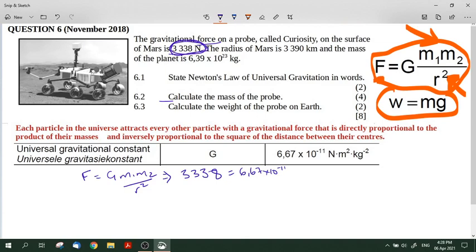So it's 6.67 times 10 to the -11 times mass one. This doesn't matter which one you pick for mass one, mass two. I'm going to pick mass one is the mass of the probe and the second mass is always the mass of the planet being considered. Now this is on Mars.